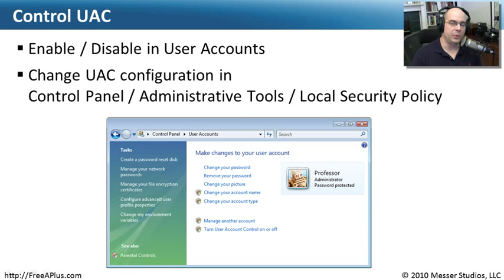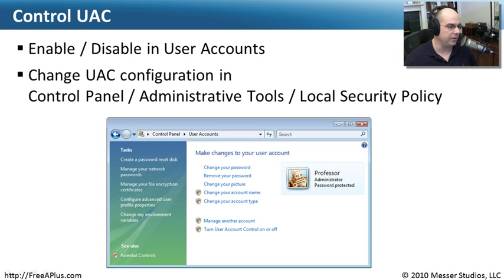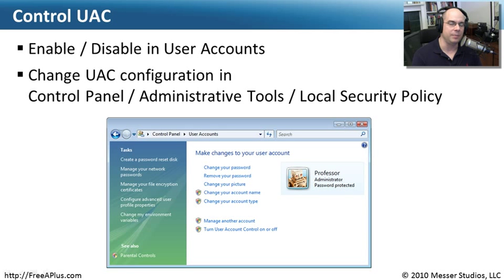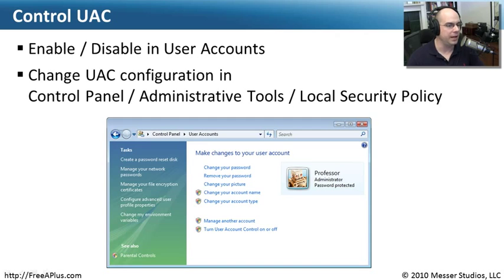When many people installed Windows Vista, they started seeing these pop-up boxes whenever they did things they felt were relatively benign, and they got a little frustrated with it. It was a different way of doing things and people were not accustomed to it. One of the things you can do is turn UAC on and off completely for a user by going into the Control Panel under User Accounts for that particular user, where you can turn User Account Control on or off directly. If you'd like to still allow UAC functionality but disable it for certain things, you can change the local security policy of your computer and decide what you'd like to be prompted on.